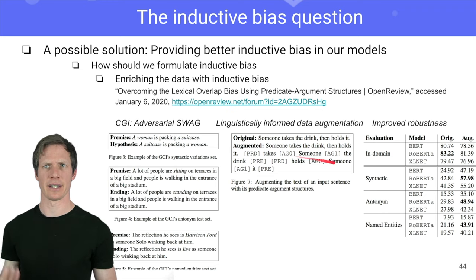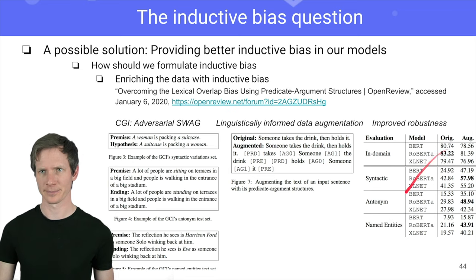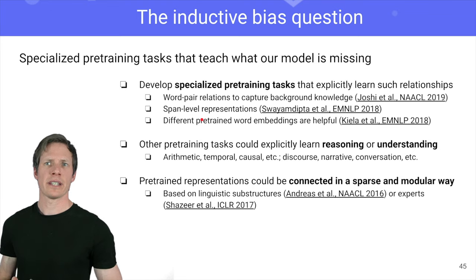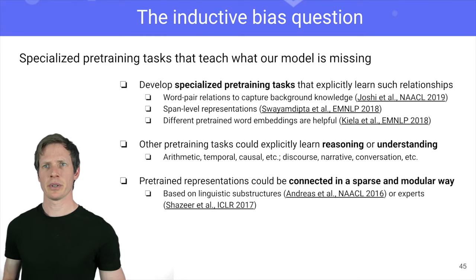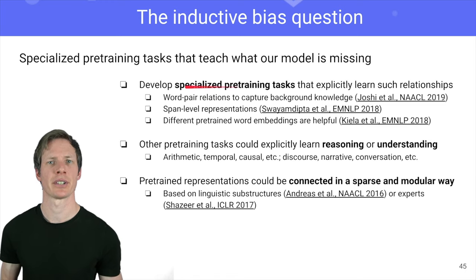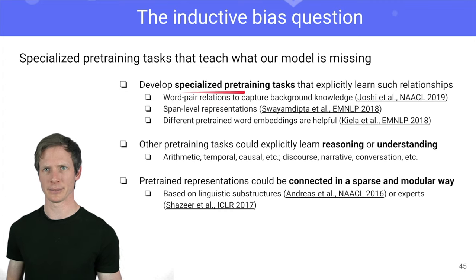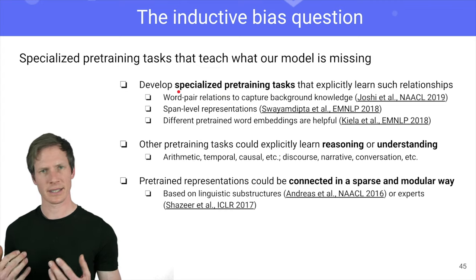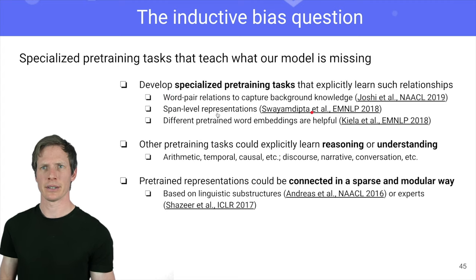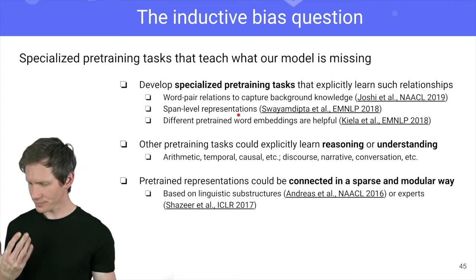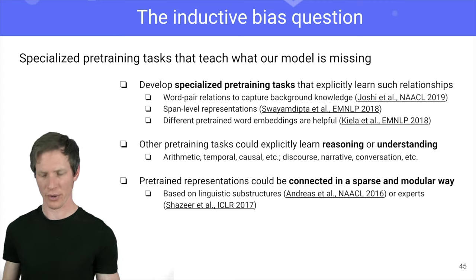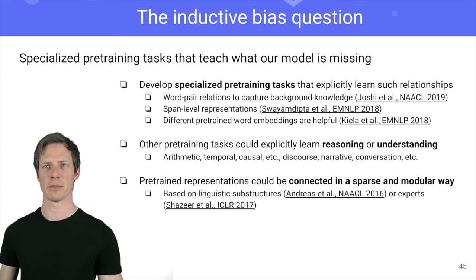They experimented on an adversarial SWAG dataset. What we probably want to do is work on pre-training to get some deeper linguistic information into our pre-training. For instance, we can add more linguistically informed span-level representations, or we can try to have a more modular way to pre-train our models. This is all very open, but how to incorporate linguistic information in pre-training will probably be important as well.